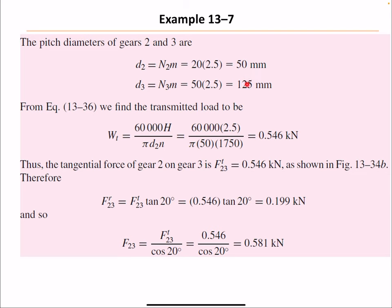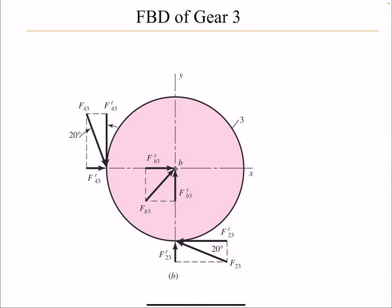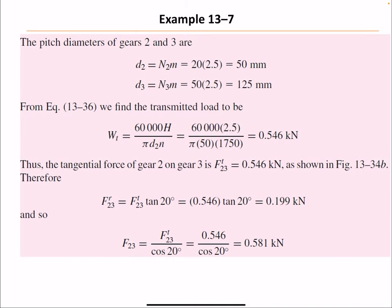We find the diameters using the module and number of teeth. After finding the diameters, I can find the tangential component because I have the power, the RPM, and the diameter — I'll use the pinion diameter. This gives the tangential component of the force gear 2 acts on gear 3. The radial component is then the tangential component times the tangent of the pressure angle, and the overall resultant force is the tangential component divided by cosine 20°.